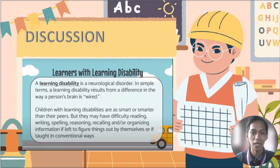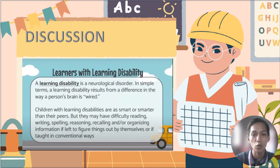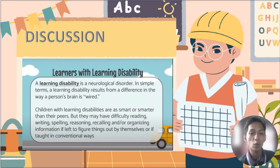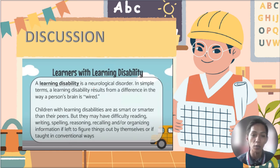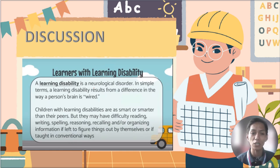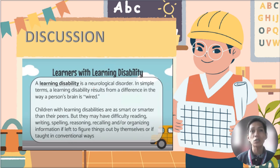Now let's move on to our discussion. A learning disability is a neurological disorder. In simple terms, a learning disability results from a difference in the way a person's brain is wired. Children with learning disabilities are as smart or smarter than their peers, but they may have difficulty in reading, writing, spelling, reasoning, recalling, and organizing information.